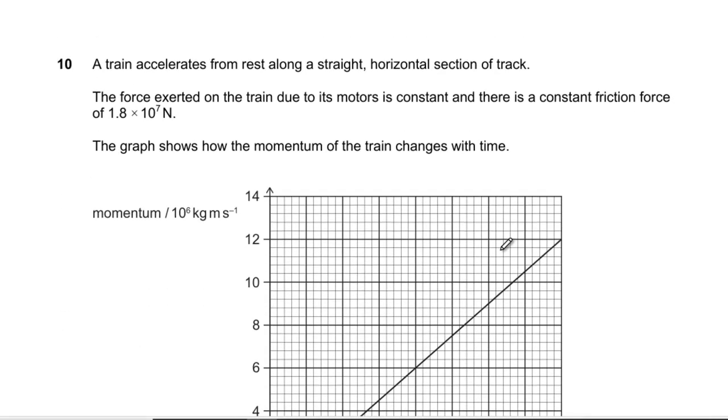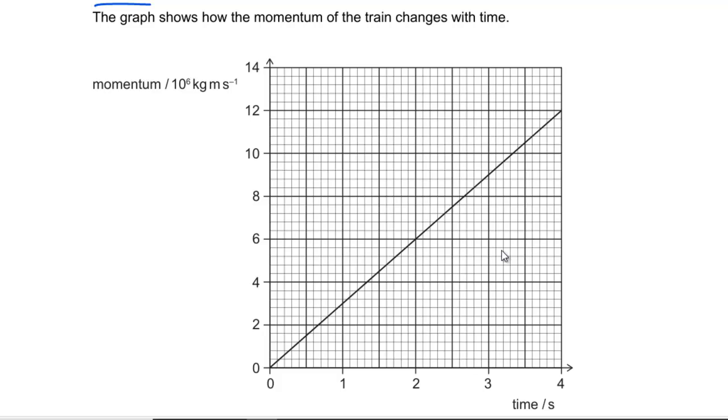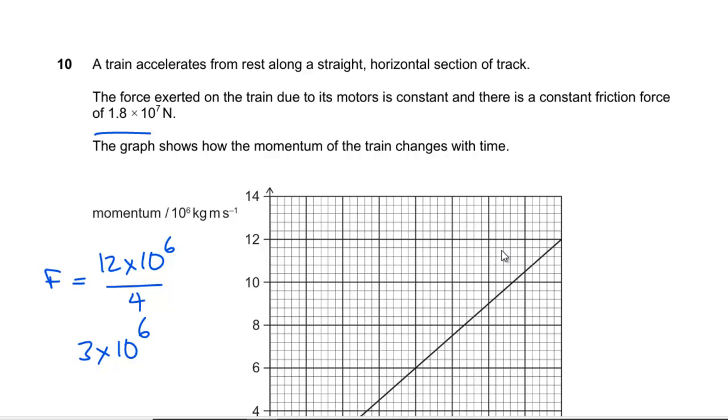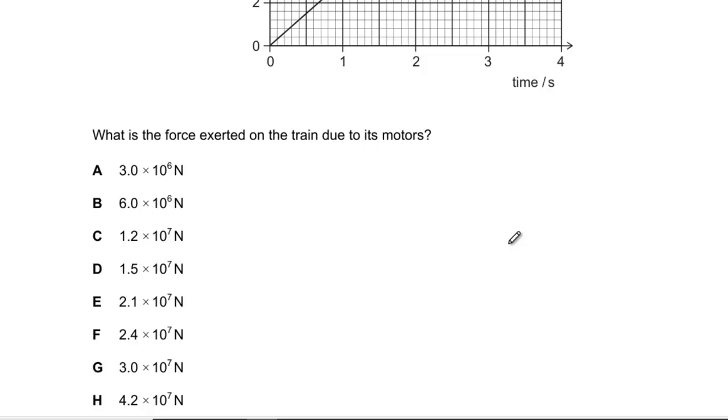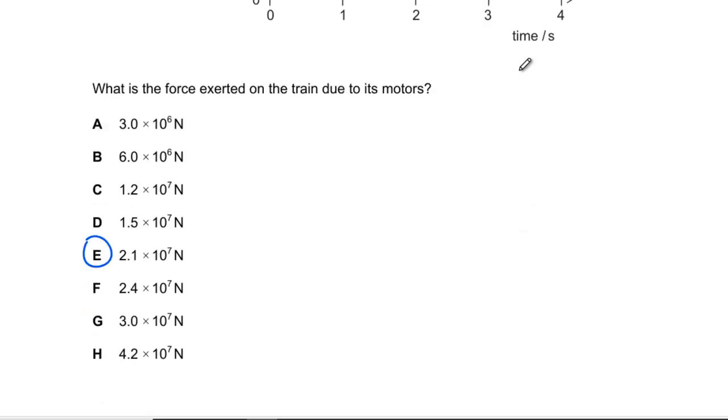Question 10: Train accelerates from rest along a straight horizontal track. Force exerted on the train is constant and there's a constant frictional force. Graph shows momentum with time. This gives us our net force which is rate of change of momentum. We've gone to 12 × 10⁶ over 4, so we've got 3 × 10⁶. That's the net force, so we add on the friction which is 1.8 × 10⁷, giving 2.1 × 10⁷, which is E.